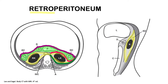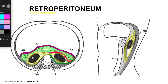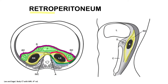Now what about the posterior pararenal space? The margins of the posterior pararenal space are formed by the renal fascia. Shown here in green, the posterior margin of the posterior pararenal space is formed by the transversalis fascia. It also has its margins formed by the peritoneum and the lateral conal fascia.